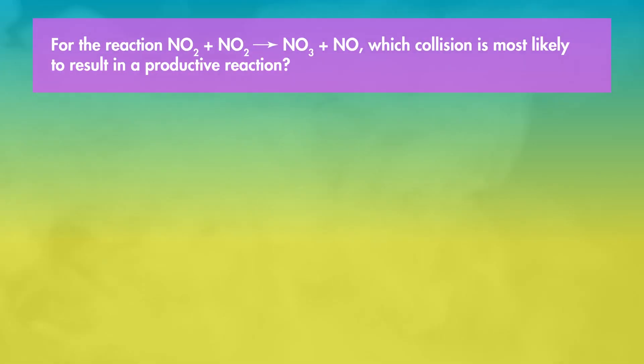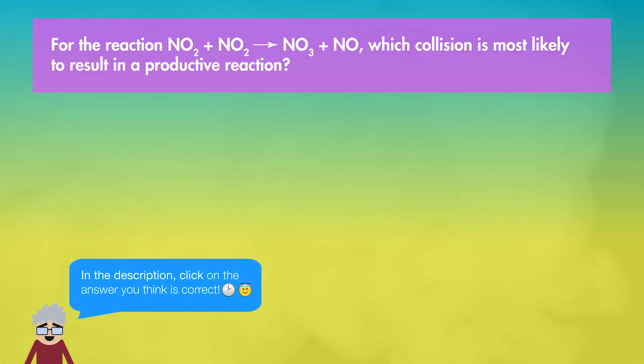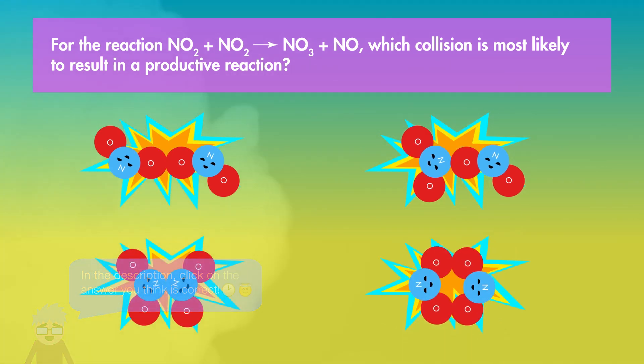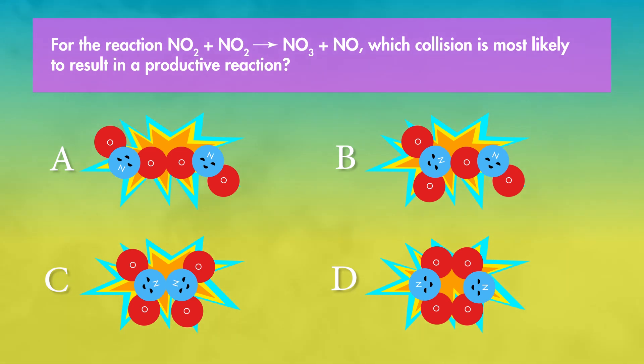The first step in the thermal decomposition of nitrogen dioxide is the reaction of two NO₂ molecules together. Which orientation of molecules colliding is necessary for this reaction to proceed? Because the oxygen atom is being transferred from one nitrogen to another, the intermediate structure has to involve a collision of one molecule's oxygen with the other molecule's nitrogen.